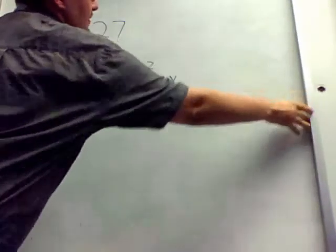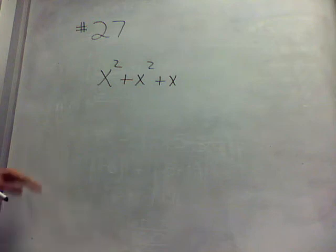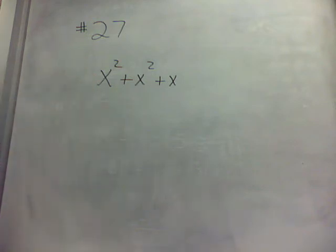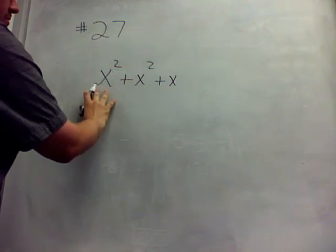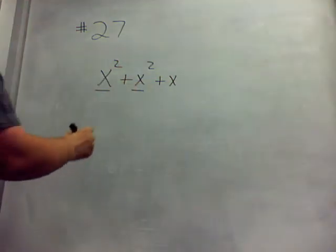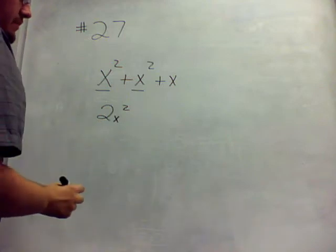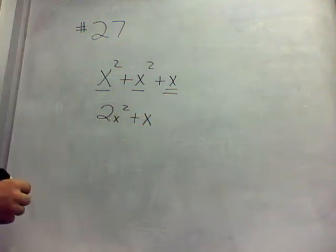Next, we're going to move on to number 27. Number 27 asks us to simplify by combining like terms: x squared plus x squared plus x. We're going to be combining the like terms by addition. The two like terms here are x squared and x squared. So 2x squared. There's only one x term, so we bring that one down. That's actually our answer.